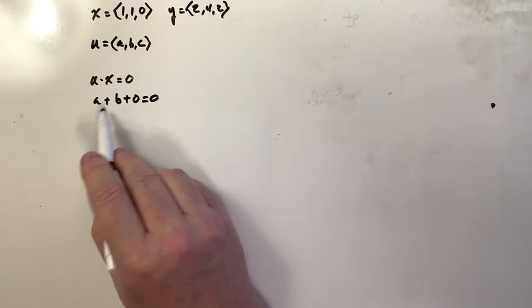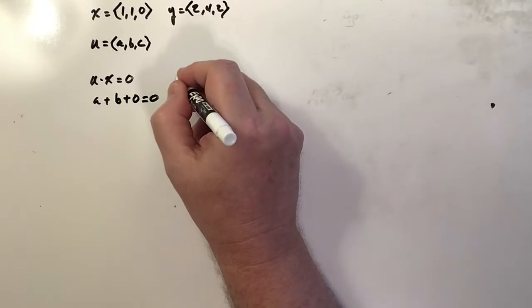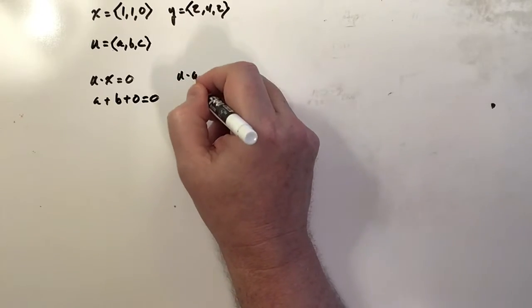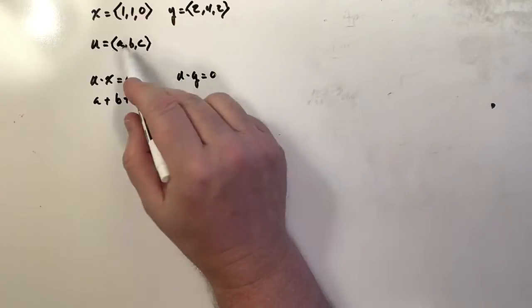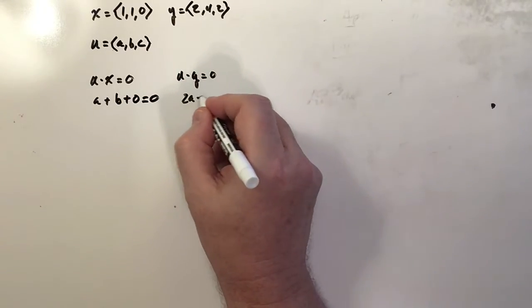Now I want to do the same thing by taking u dot y, and of course I'll set that equal to 0. u dot y then is 2a plus 4b plus 2c equals 0.